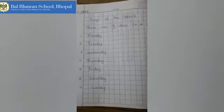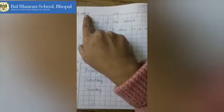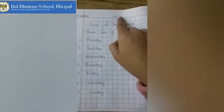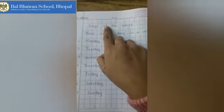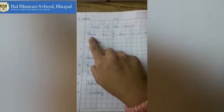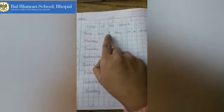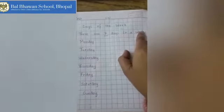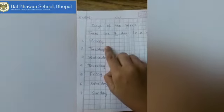Now in your notebook, children, write the date first — that is 5th of January 2021. Write classwork at the top. Give the heading: Days of the Week. Then in the next line we are going to write: there are seven days in a week — Monday, Tuesday, Wednesday, Thursday, Friday, Saturday, and Sunday.